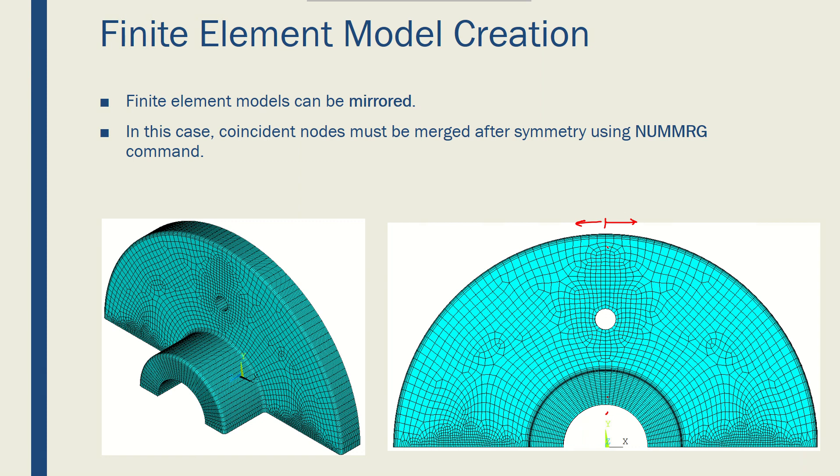However, when you go through this step, the nodes that fall on x equals zero on this plane will be coincident. So you're going to have two nodes at the same point. You have to use the NUMMRG command to merge those coincident nodes in order to make this whole thing a unit solid model, or a solid part. This is something that we'll be covering throughout this course, so don't worry if you don't understand what NUMMRG is doing at this point.